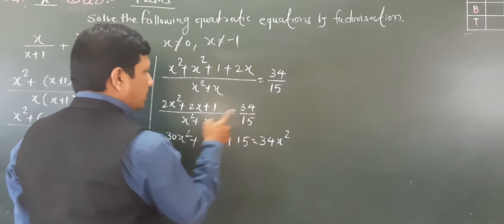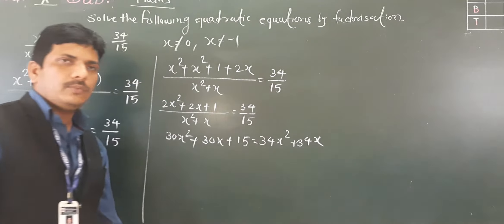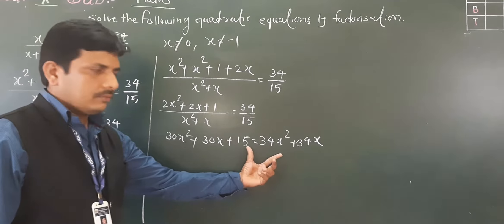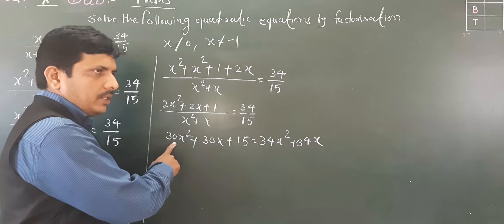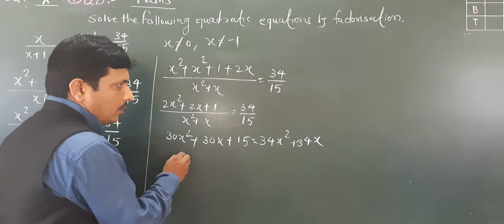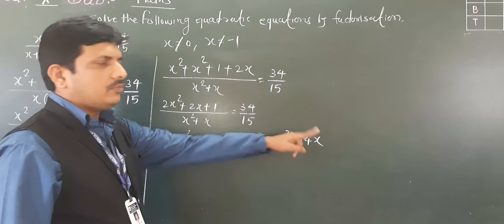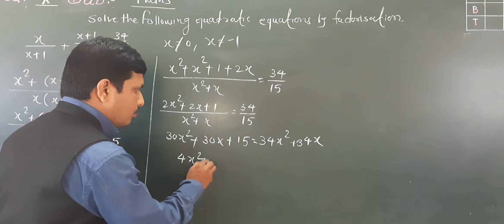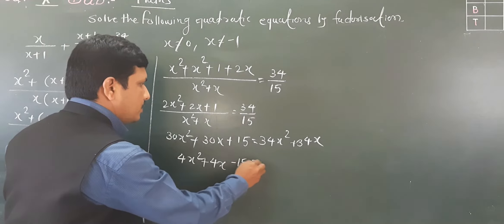After cross multiplication: 15(2x² + 2x + 1) = 34(x² + x), giving 30x² + 30x + 15 = 34x² + 34x. Rearranging: 34x² − 30x² gives 4x², and 34x − 30x gives 4x, so we get 4x² + 4x − 15 = 0.